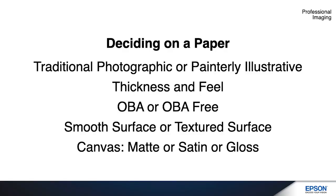And then OBA — optical brightening agent — or OBA-free. For some people this is very important to be OBA-free; for others, less important. Just be informed about what those are. And then the surface type: you want something that's smooth, mildly textured, or heavily textured.